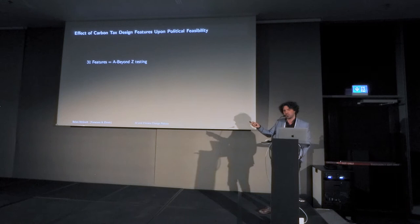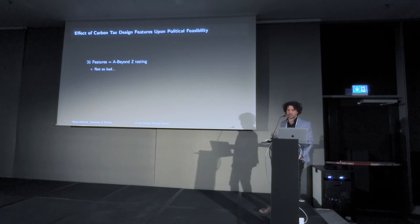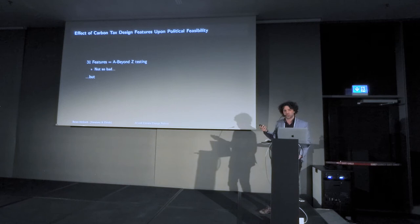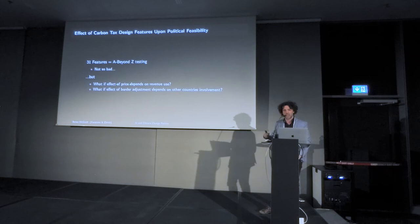We're going beyond A-B testing because we have 31 things here, which is still manageable from a statistical perspective. However, the key issue is that there are potential interactions between these different design features. For instance, I may be more willing to pay a higher carbon price if I know the revenue will be used in a way that benefits me or society. I may also be less concerned about border adjustments when other countries are included in the first place.